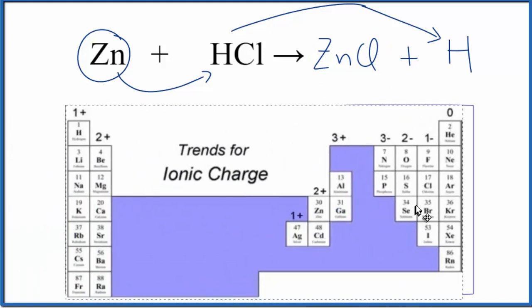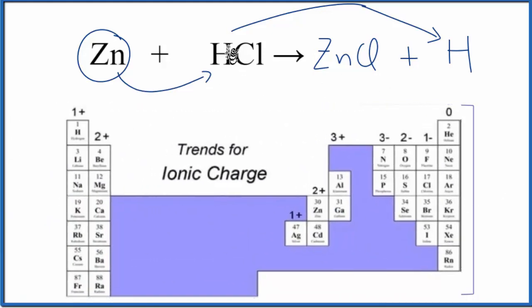So on the periodic table, we can look and see that hydrogen right here, that's in group one. All of these have a positive charge. Chlorine over here, that has a negative charge.